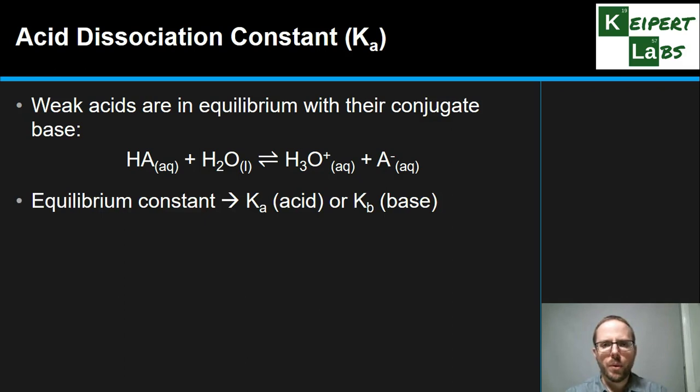For this, we've used K before, looking at Kc or Ksp, those sorts of things. We now talk about Ka, A for acid. We've also got Kb for base, looking at weak bases that are in equilibrium as well.